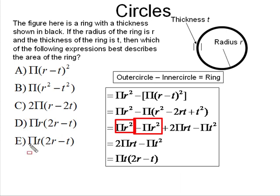So you look at your answer choices, which of the following matches this? Well, it's here, answer choice E. So there you have it, πT times 2R minus T.